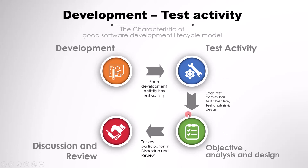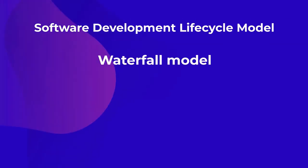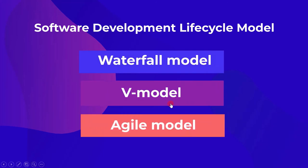This is the basic characteristic of a good software development lifecycle model. To recap: first we select a development lifecycle model; each development activity should have test activities; each test activity should have objective, analysis, and design; and testers should be part of discussion and review. Next, we will cover three different types of software development lifecycle models: the Waterfall model, the V-Model, and the Agile model.